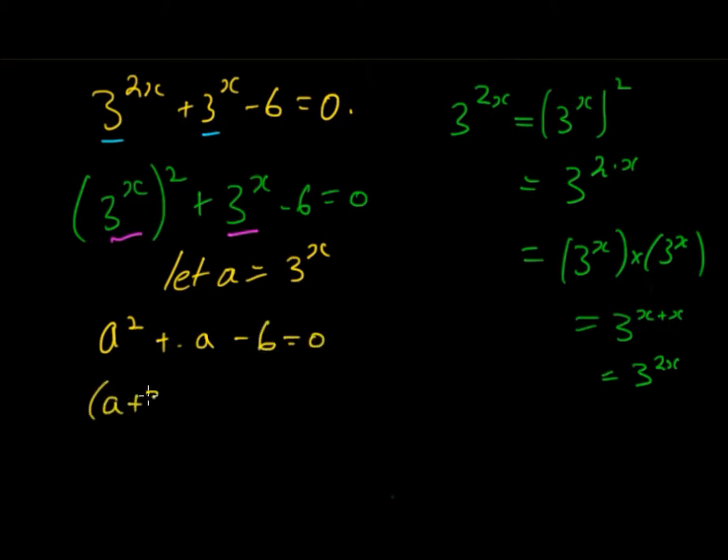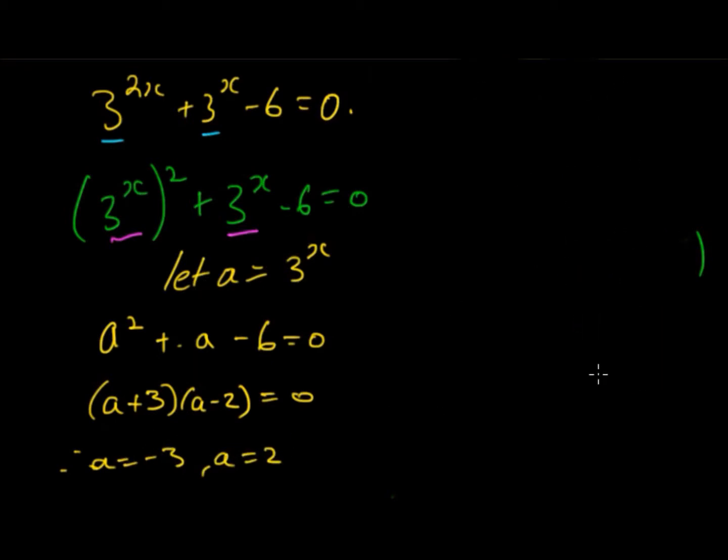Now we can solve that using previous methods: 3 times -2 gives us -6, and 3 minus 2 gives us 1. You could have also solved that using completing the square or the quadratic formula to give us a = -3 and a = 2. Now we substitute what a equals back in and we should get two different values.